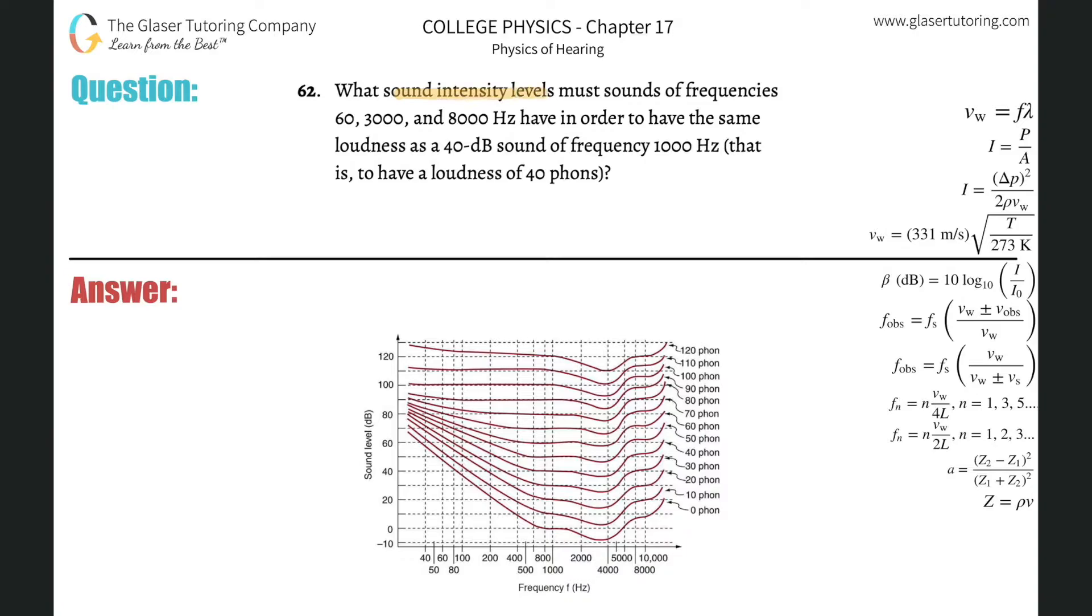Number 62, what sound intensity levels must sounds of frequencies 60, 3000, and 8,000 hertz have in order to have the same loudness as a 40 decibel sound of frequency 1000 hertz, that is 40 phones? So basically this is just interpreting a graph.